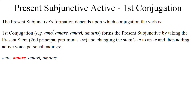We'll start with the present subjunctive active voice. The present subjunctive's formation depends upon which conjugation the verb is, so we'll start with the first conjugation. The first conjugation — for example, a verb like amo, amare, amavi, amatus — where the principal parts end in -o, -are, -i, -us — tells you it's a first conjugation.